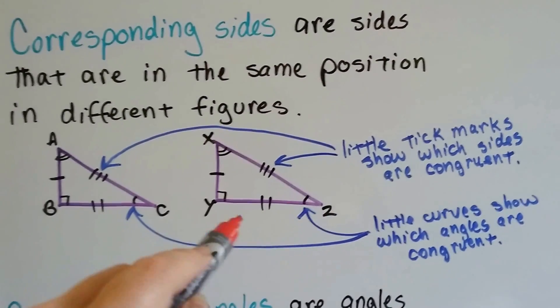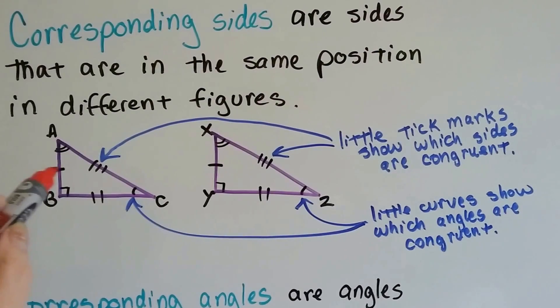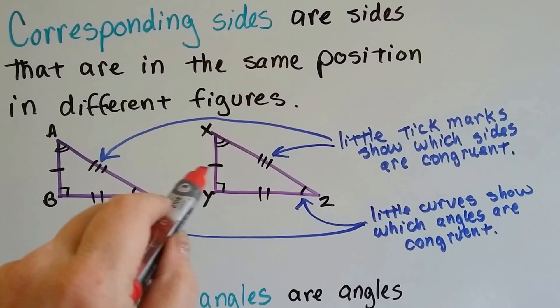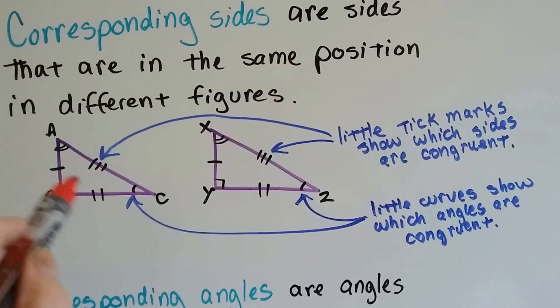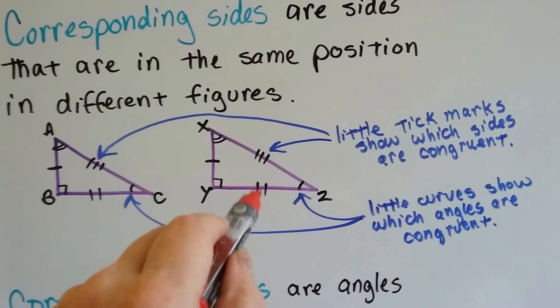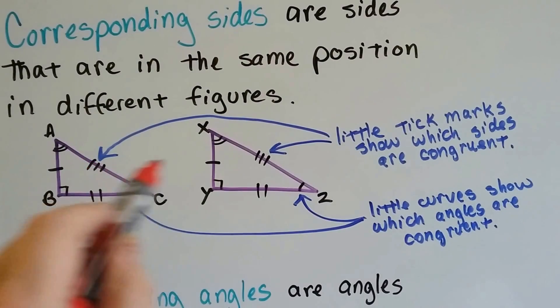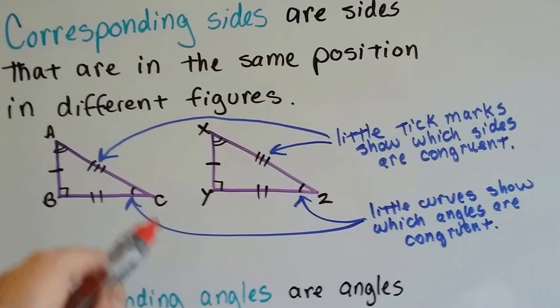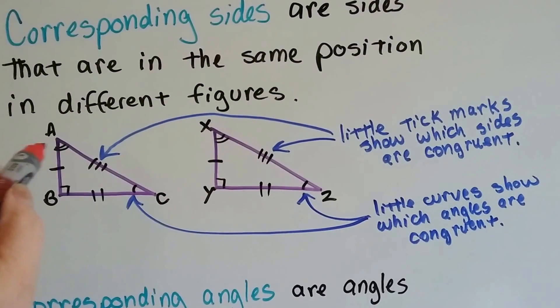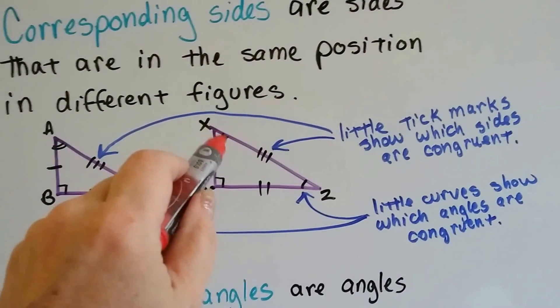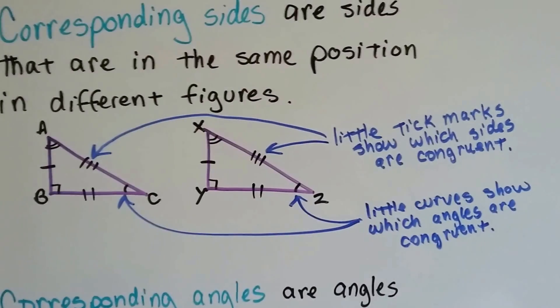And they're little tick marks. So that means this one little mark here is congruent for this side here. That means these two sides are congruent. And the two little lines means it's congruent to the one with two little lines, and the three tick marks is congruent to the three tick marks. The one curved angle is congruent to the one curved angle, and the two curves in this one means these are congruent with the two curves.